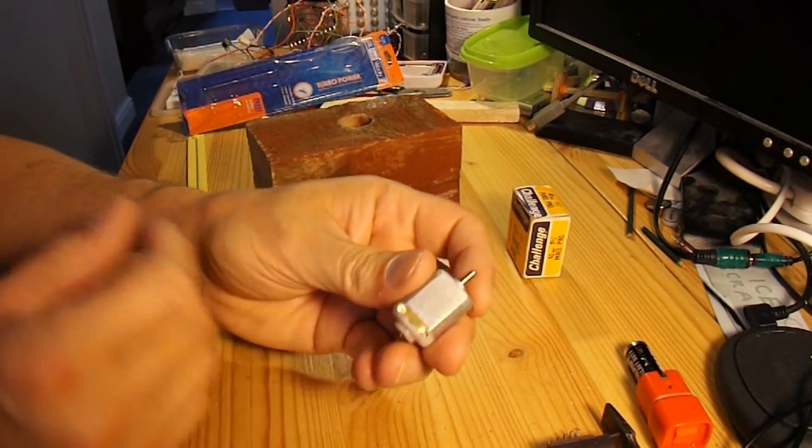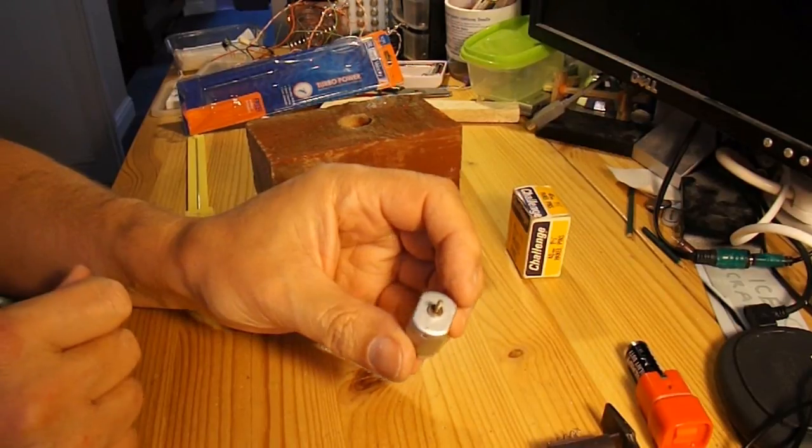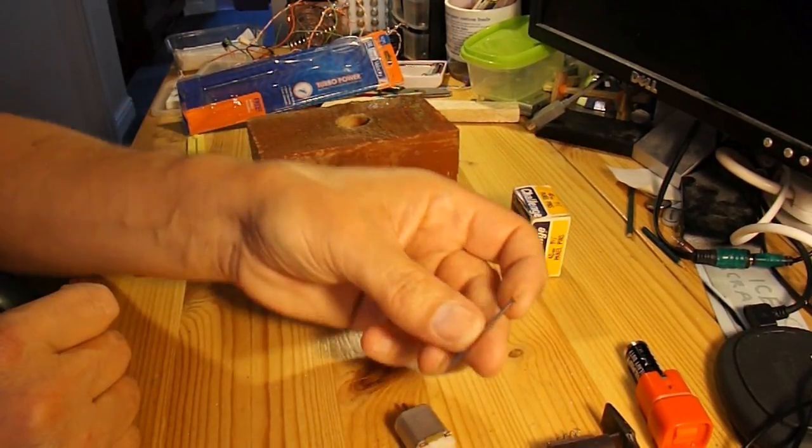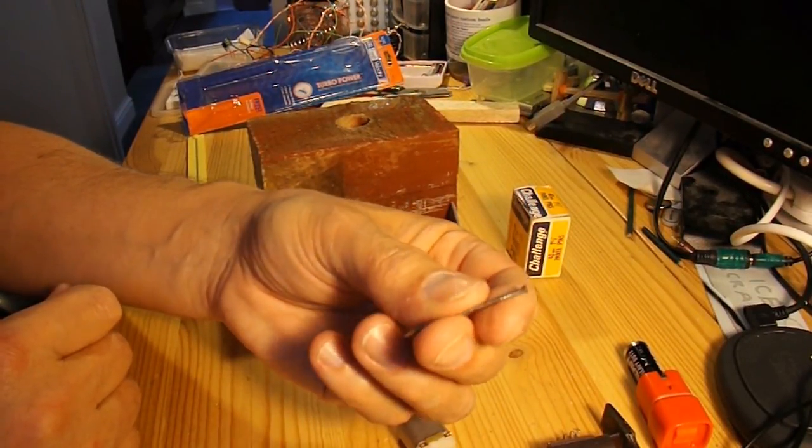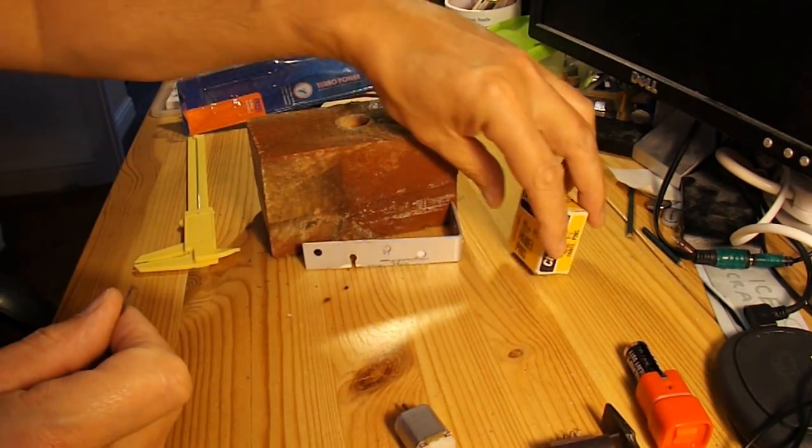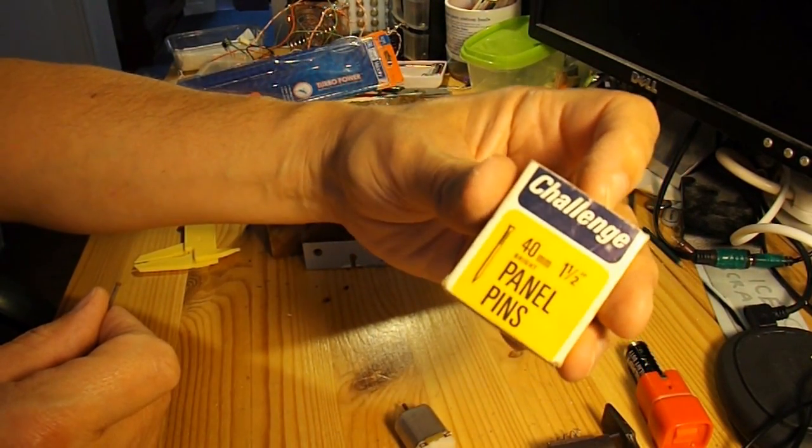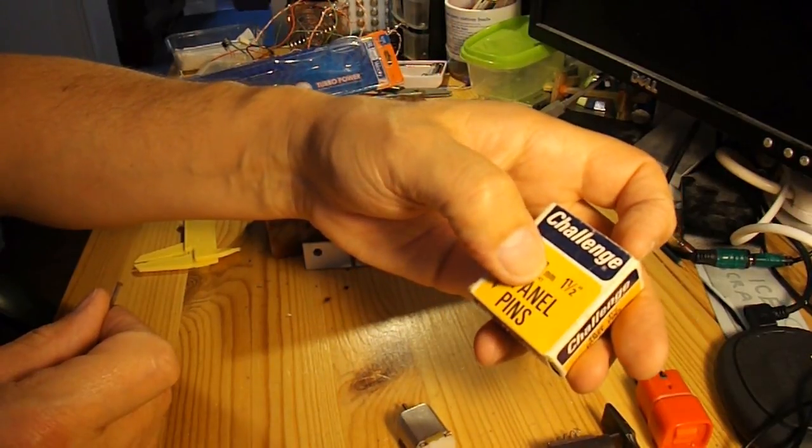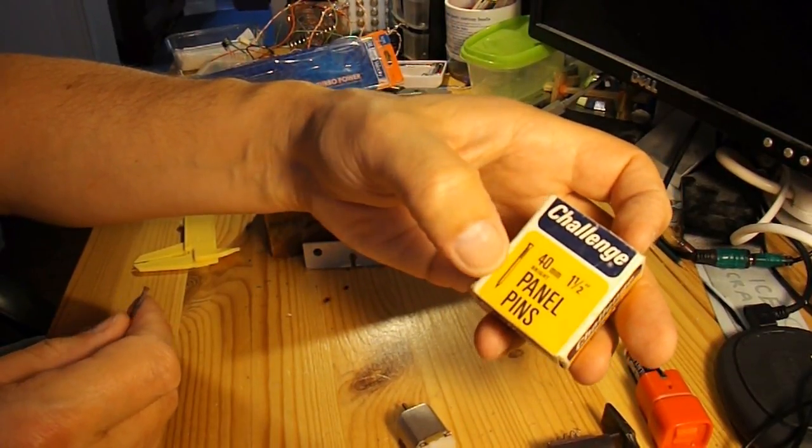And there we have the electric motor without the weight on it. That nail that I used is actually a panel pin there, 40mm, 1.5 inch panel pin.